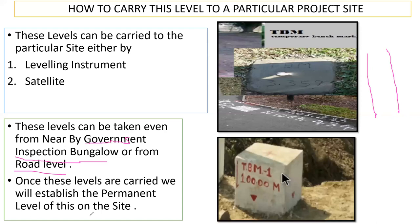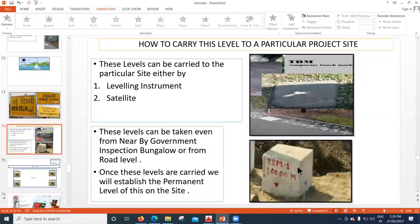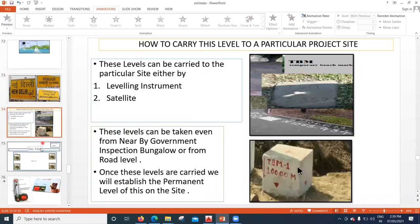Even from there also you can carry the RL and bring it to the construction site wherever you are supposed to do it. Once these levels are carried, we will establish the permanent level on the site. This kind of bund what we created at the site — with reference to this, all my construction activities level will be carried out. In the next lecture, we'll try to see how exactly those levels are transferred to the site, and we'll try to understand the different parts of auto level and leveling staff, and then how to transfer these levels. Thank you.